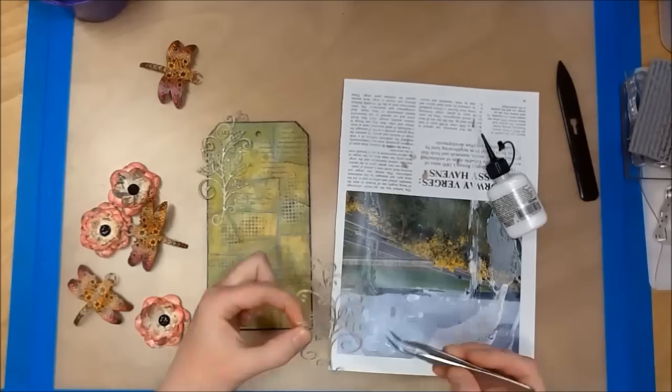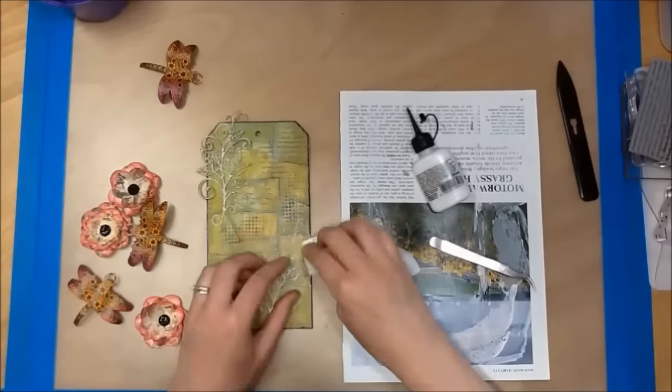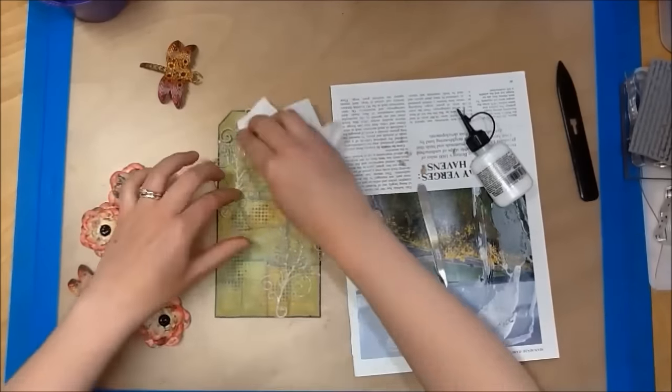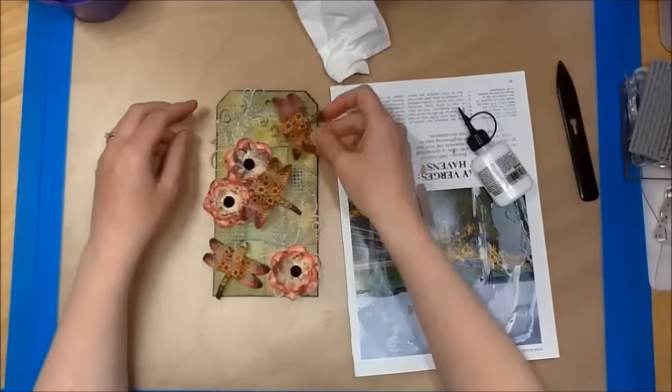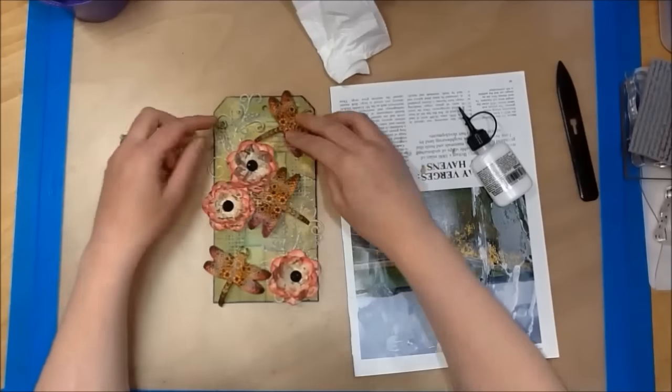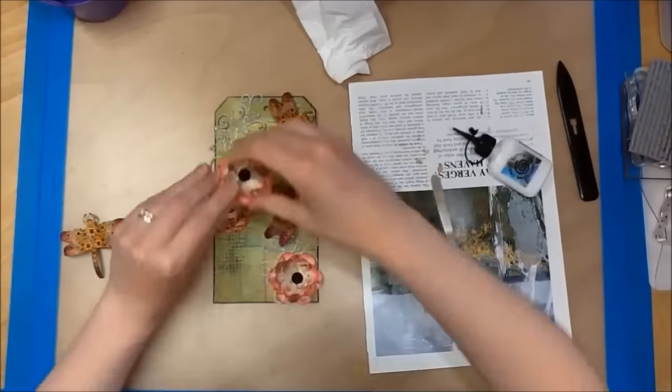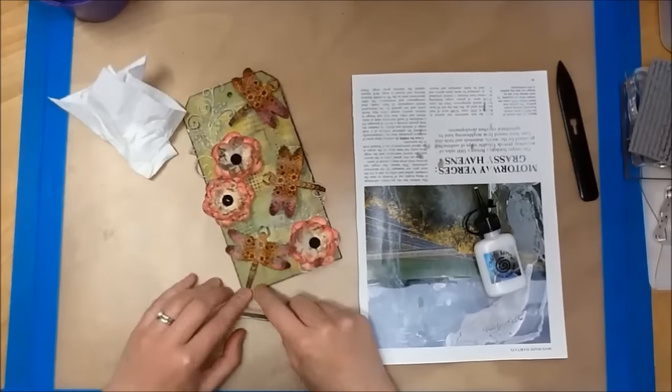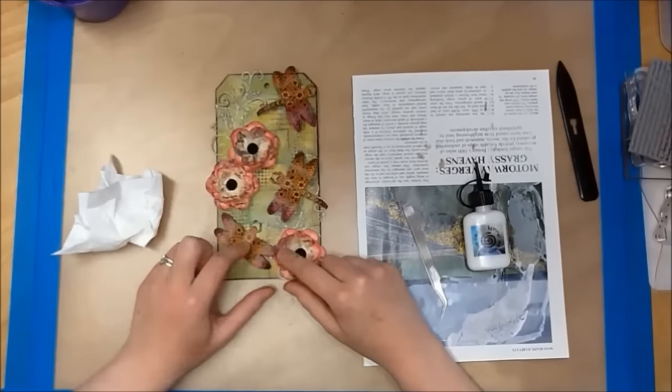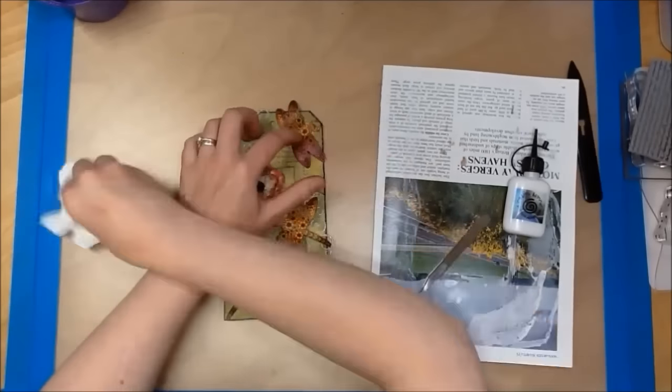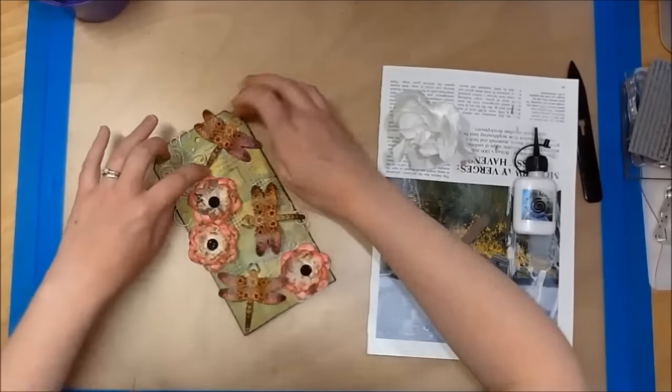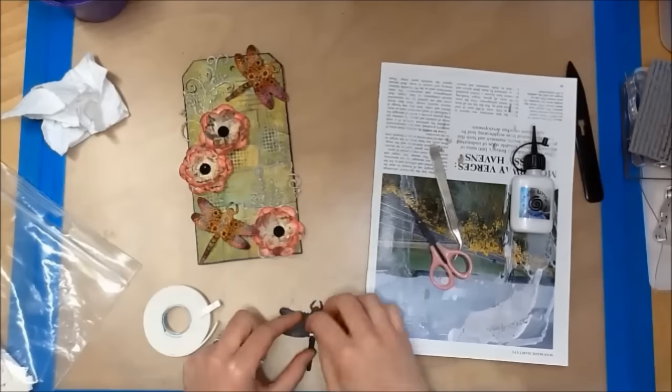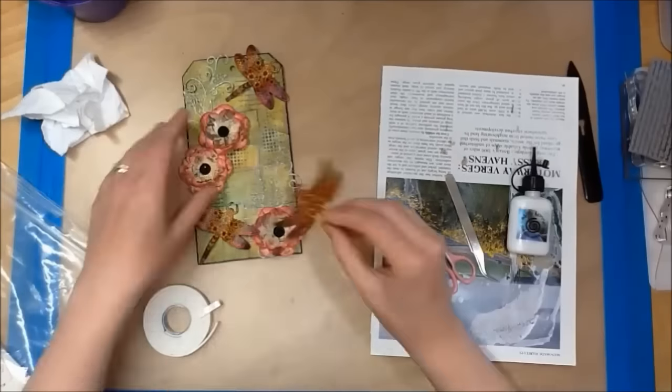I am using my Cosmic Shimmer acrylic glue to add all my pieces to my tag. Here I am using some 3D foam to add dimension to my dragonfly.